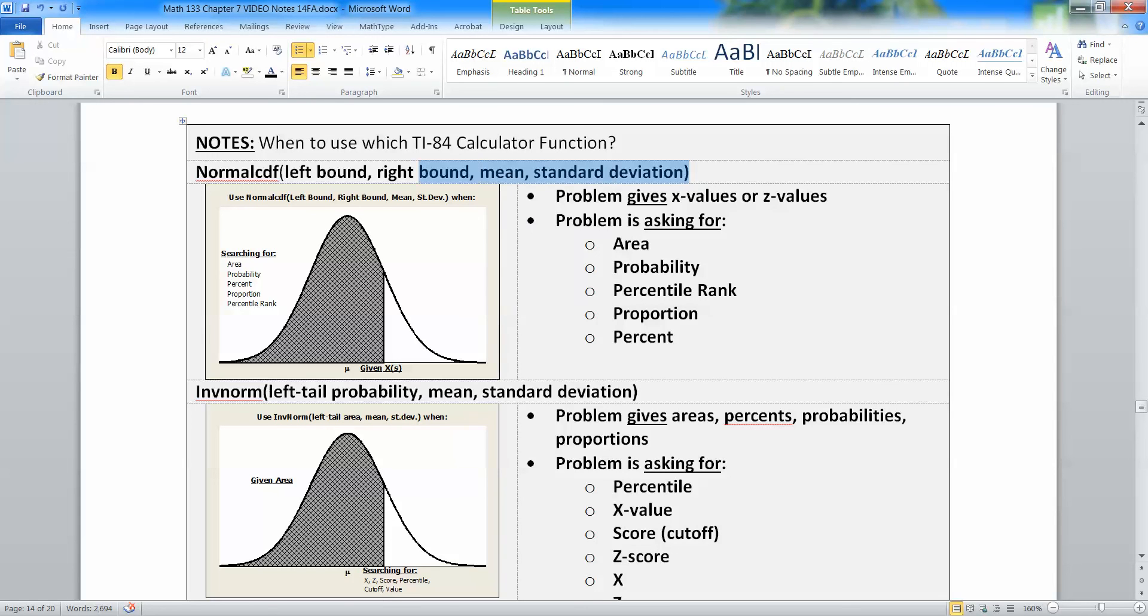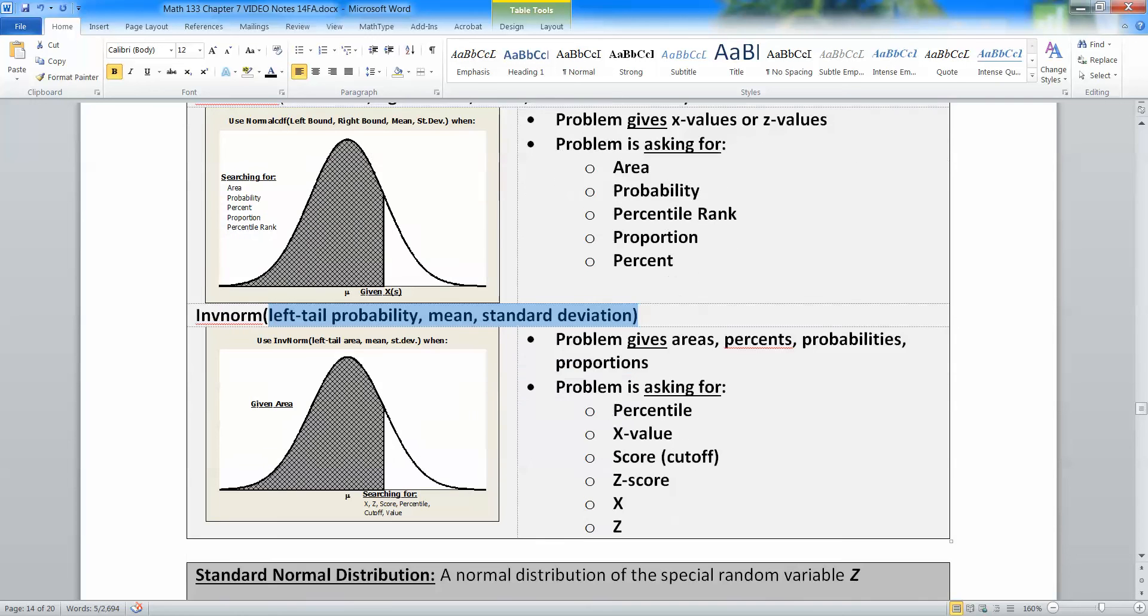Okay. So don't forget, normal CDF takes four numbers, the left tail or the left bound, the right bound, the mean and the standard deviation. Again, you are given the vertical bar. You are looking for this area, how big this area is. Inverse norm, you only put in three numbers, the left tail probability, always left tail probability, the mean and the standard deviation. You're given the area, but you're looking for where that vertical bar hits. Where does it touch the X axis?